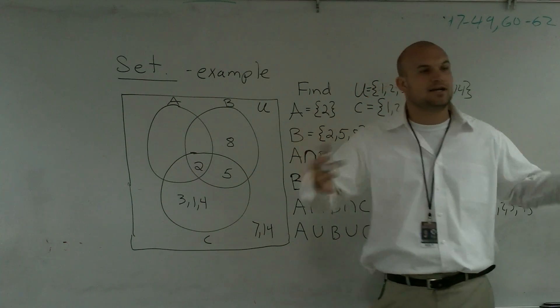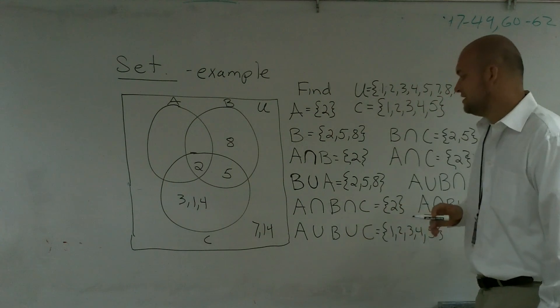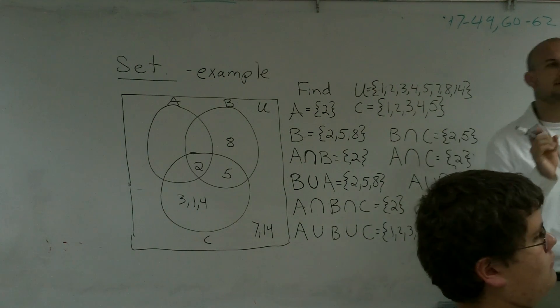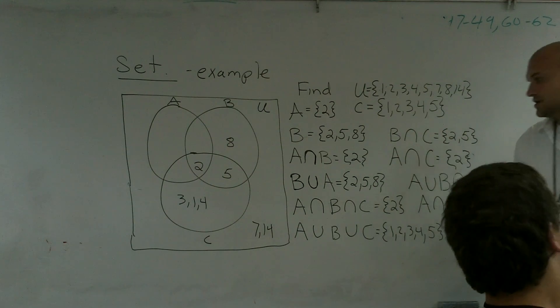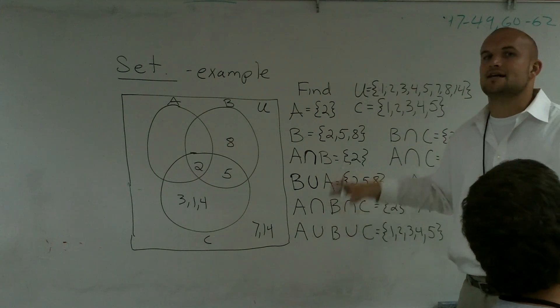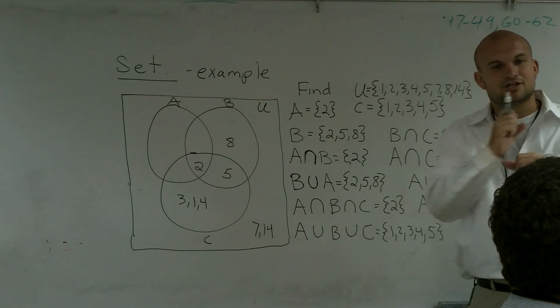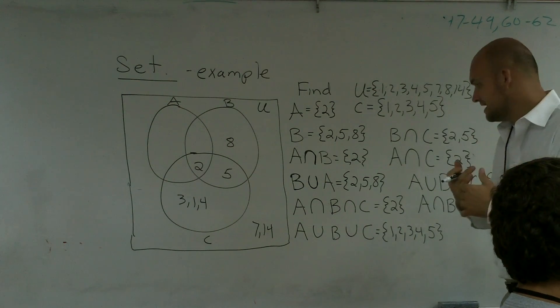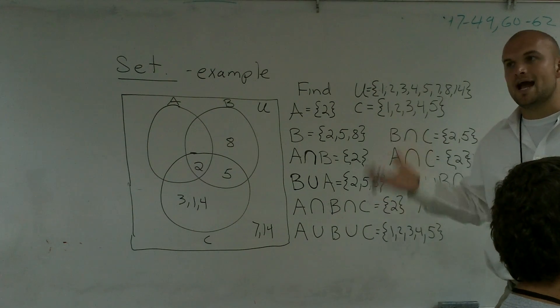So you just add, combine all of those. And when I combine A union B union C, I get 1, 2, 3, 4, 5. It's very important for you guys to be able to distinguish between your intersection sets and your union sets. Intersection is only what they have in common or only what they share. And your union sets is all of them combined. You're adding them together.